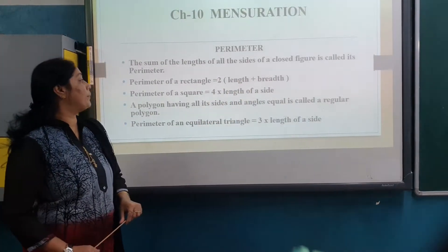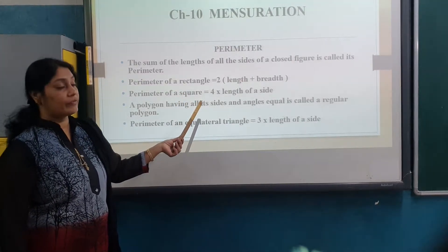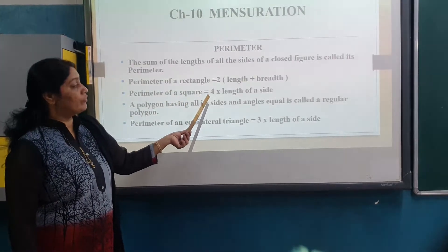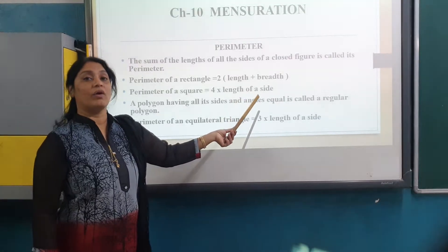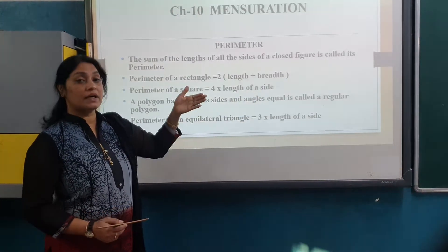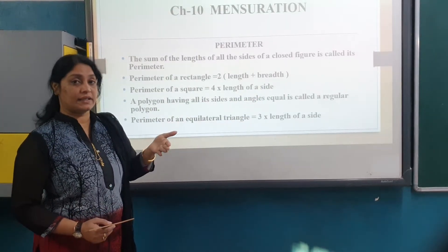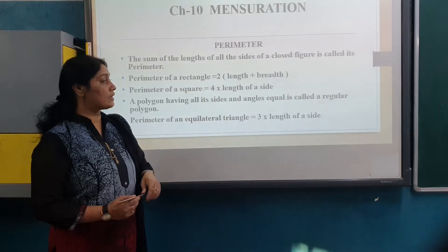Now, perimeter of a square. Here is the formula: 4 multiply by length of a side. This is all you have to learn. Here we have a shortcut.